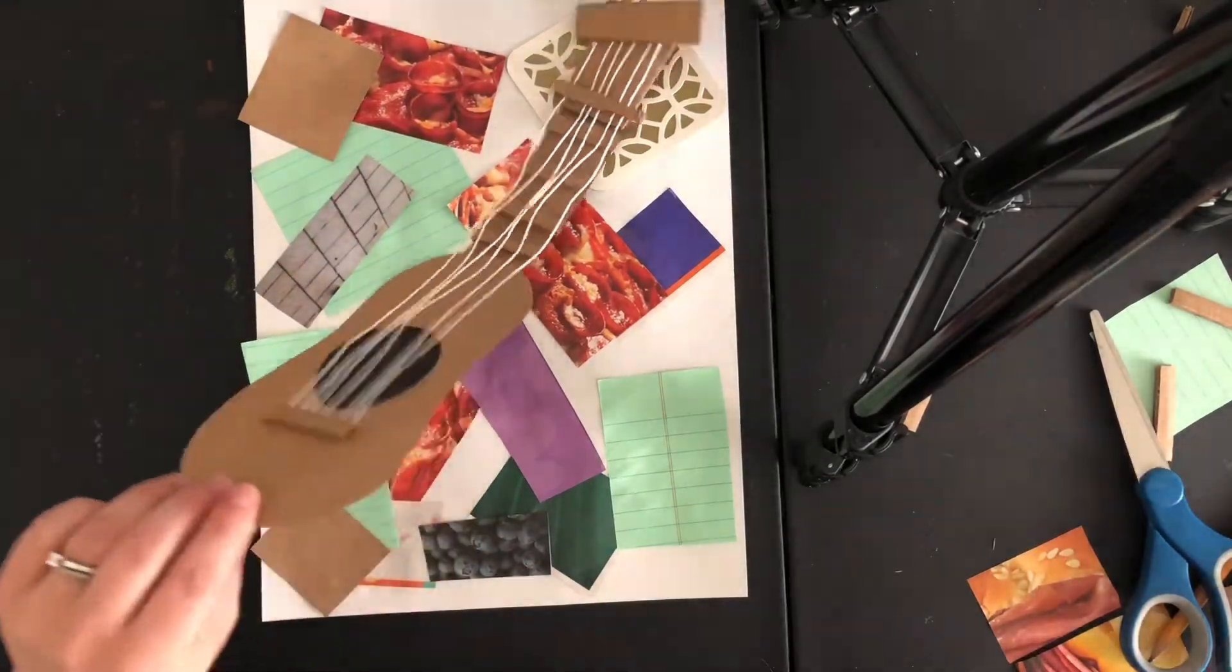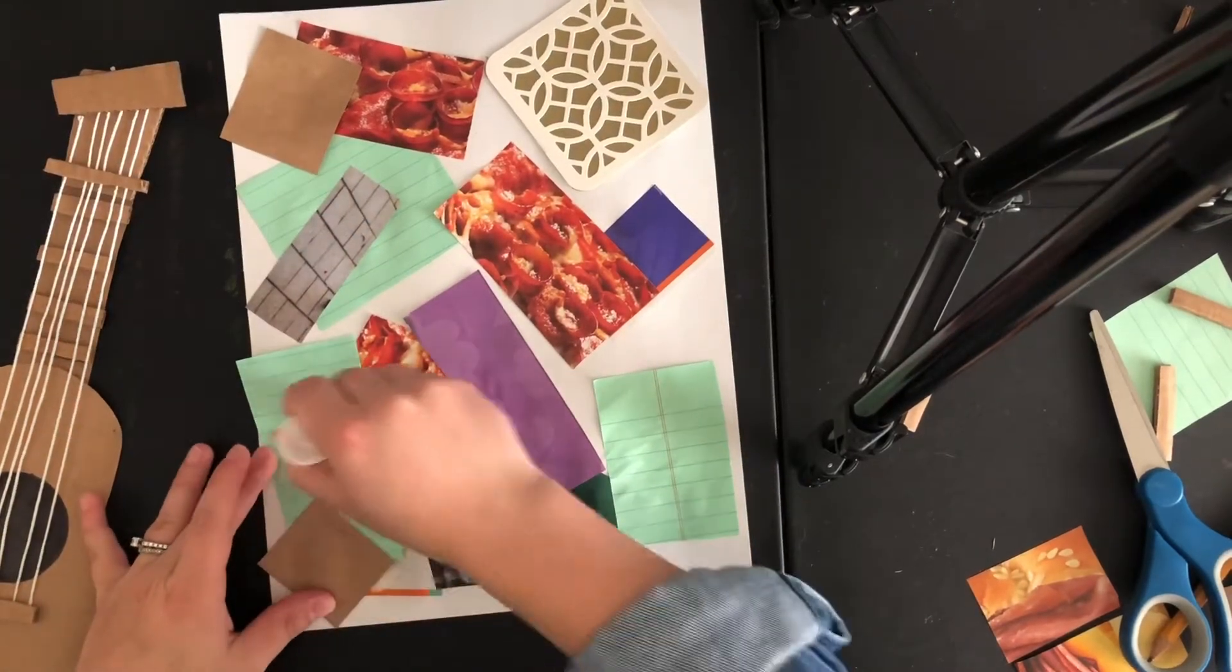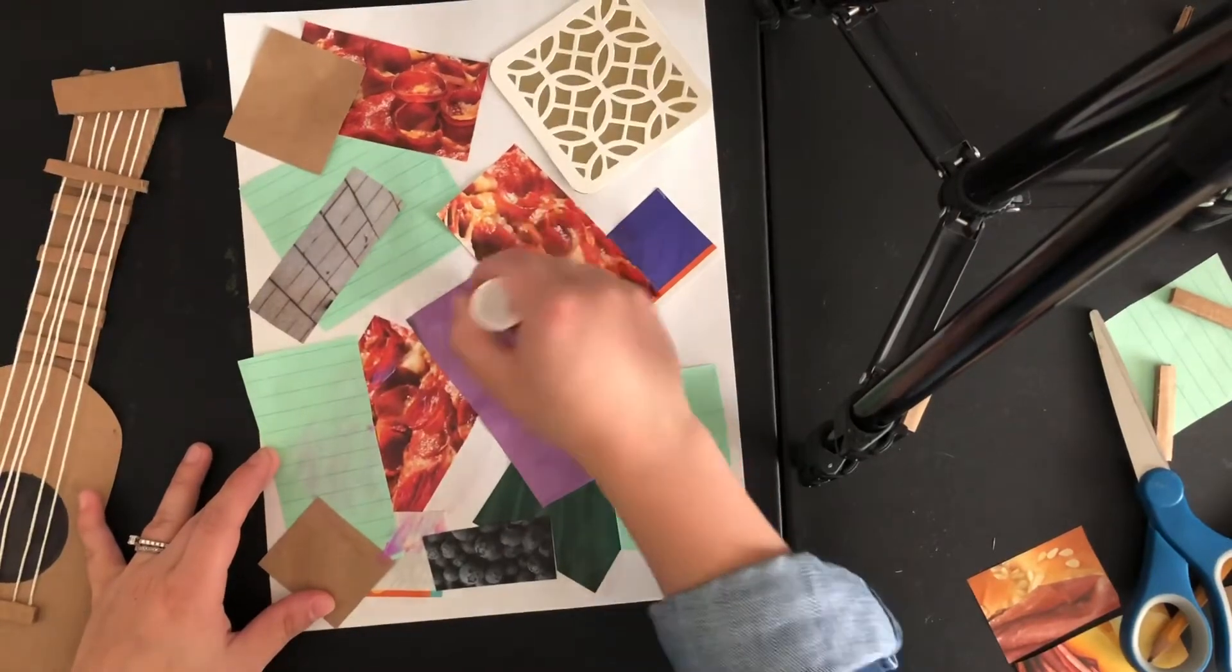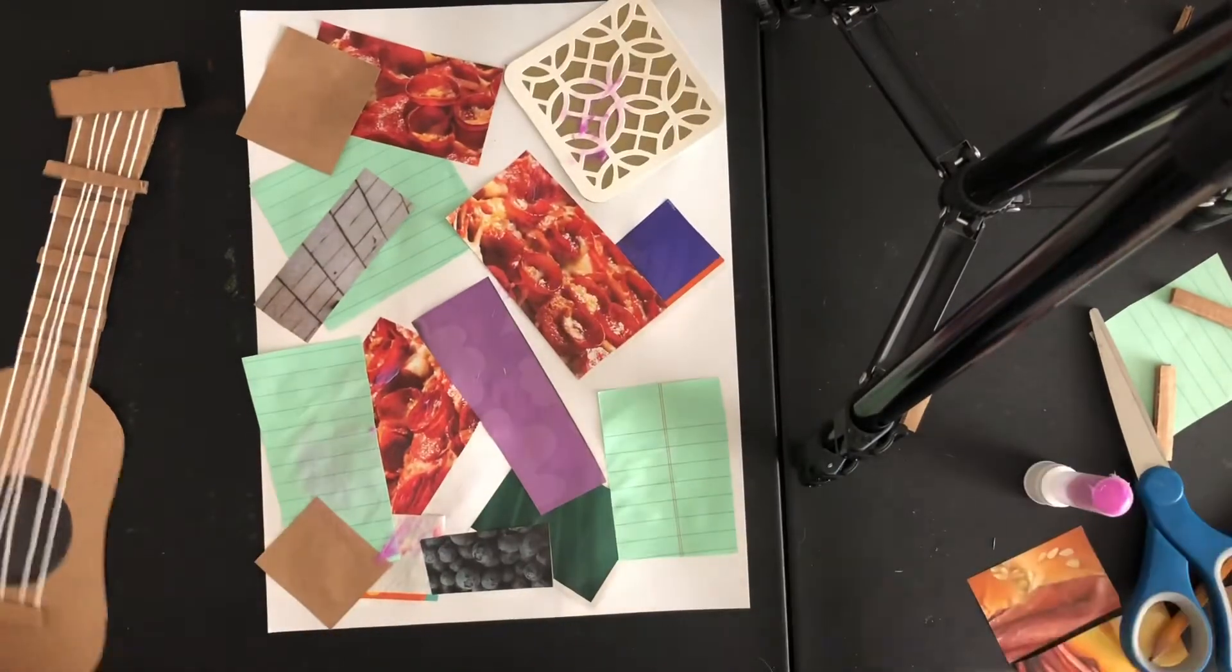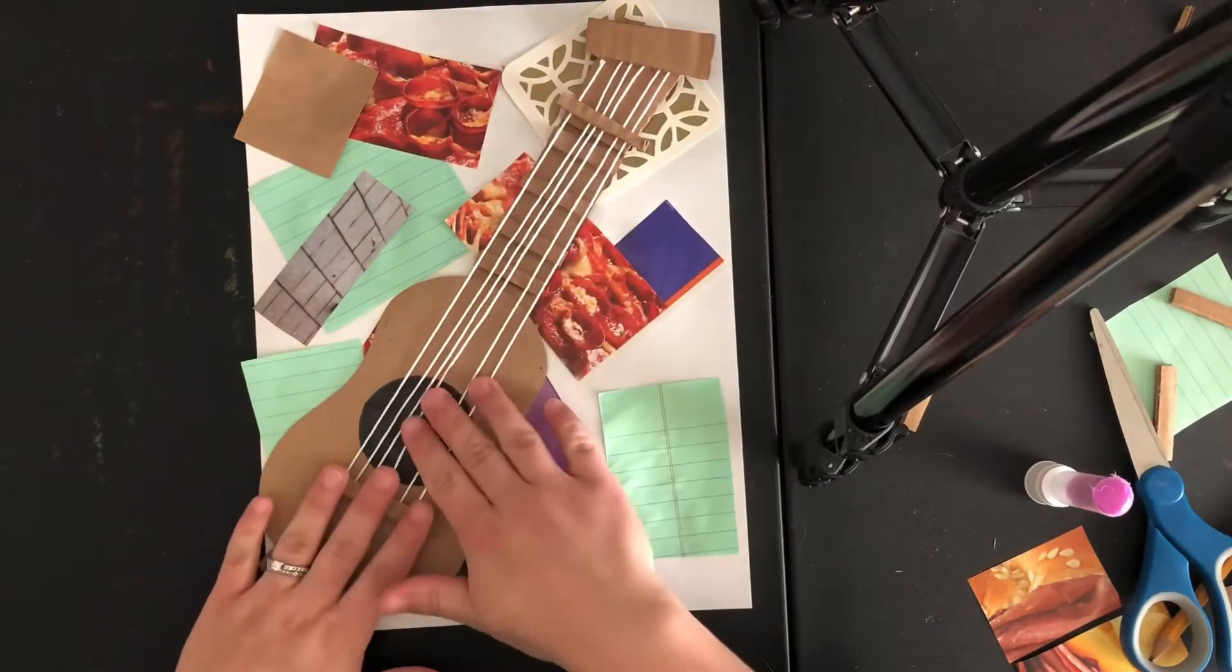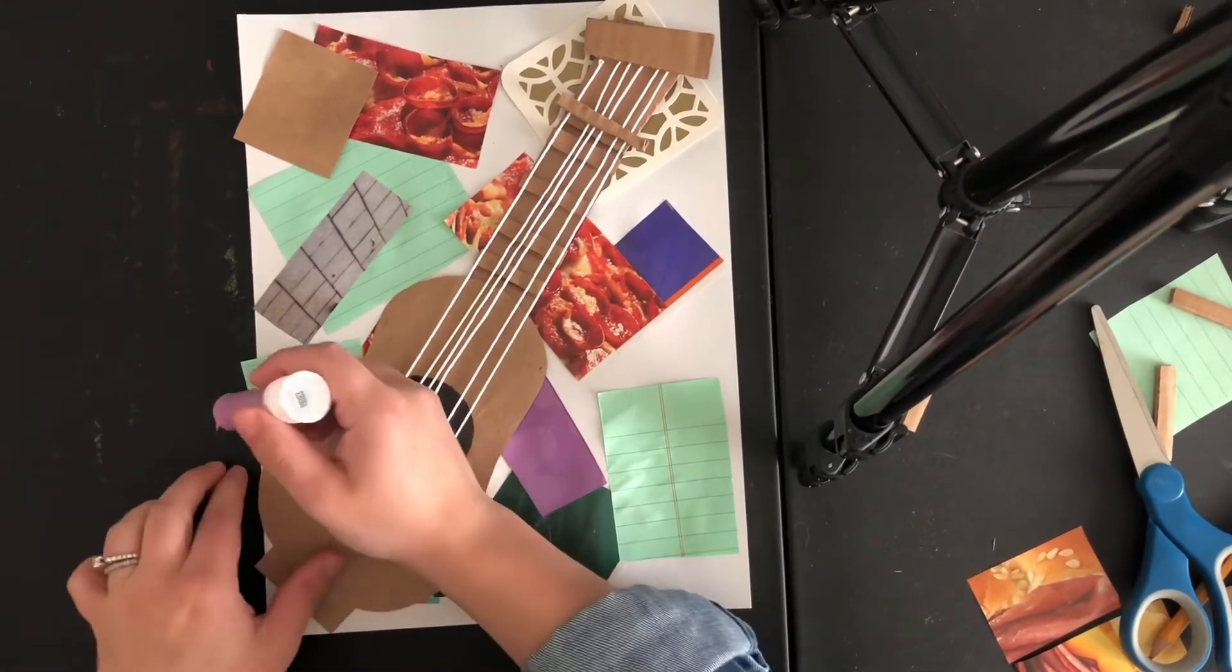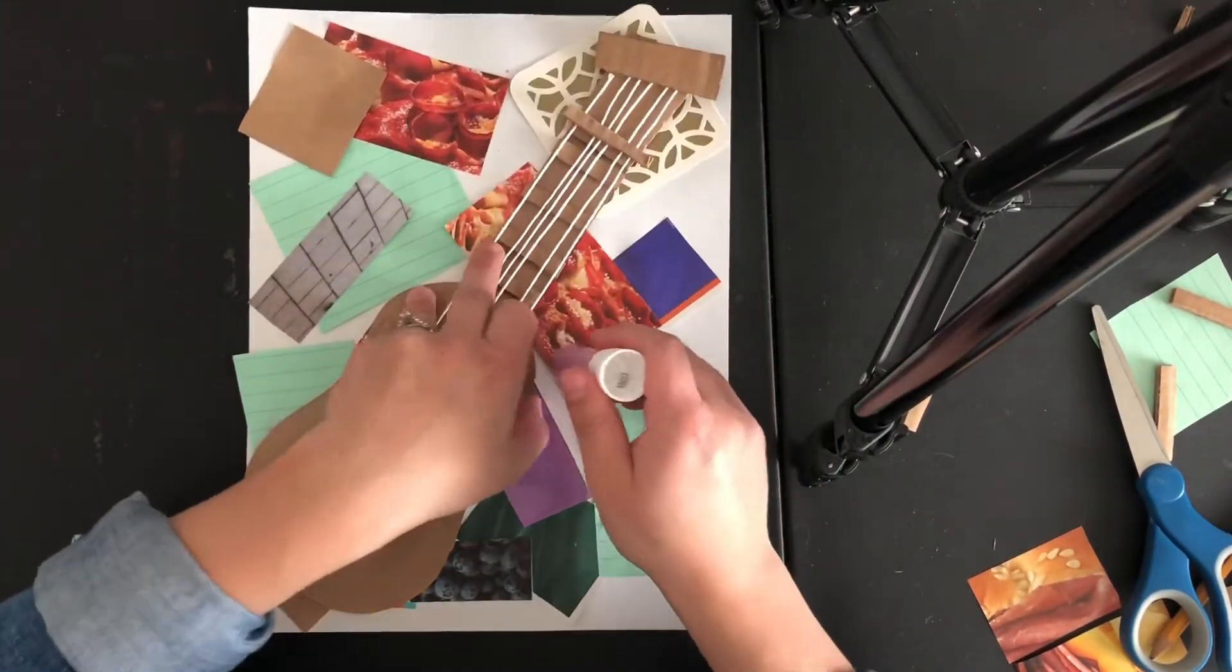And so I'm going to go ahead and glue this down to my paper. And you do want to be careful because if your paper is not dry and depending on what kind of glue you have, this could pull up the paper. So just be gentle when you're gluing it. You can always lift pieces of your guitar, add some more glue and then push it down. Same thing up here, wherever it's a little loose.